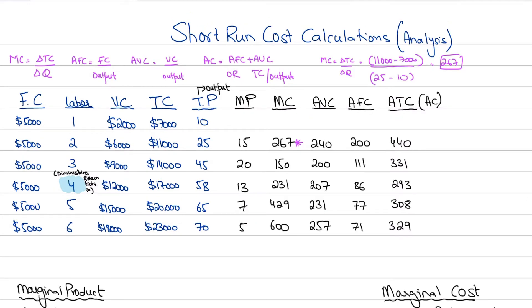Okay, you're back, and I'm assuming you must have done the calculations. I have also done my calculations. You can see I have calculated the marginal product, the marginal cost, the average variable cost, the average fixed cost, and the average total cost, also known as the average cost.